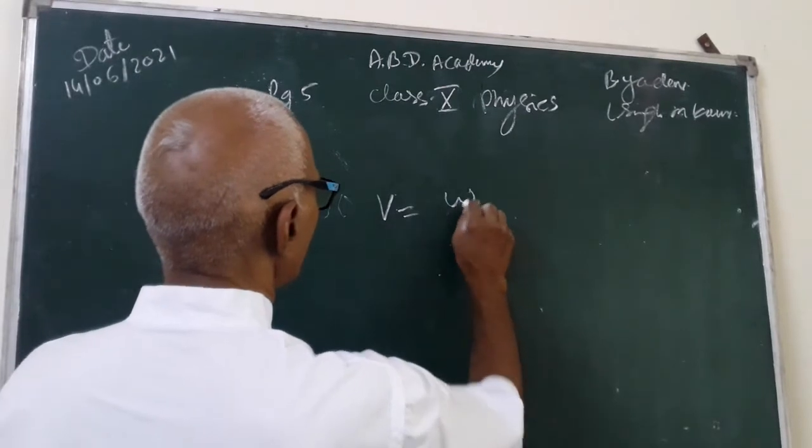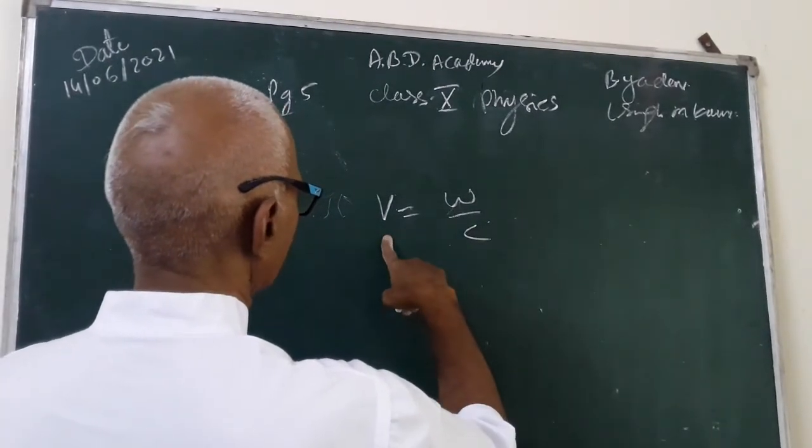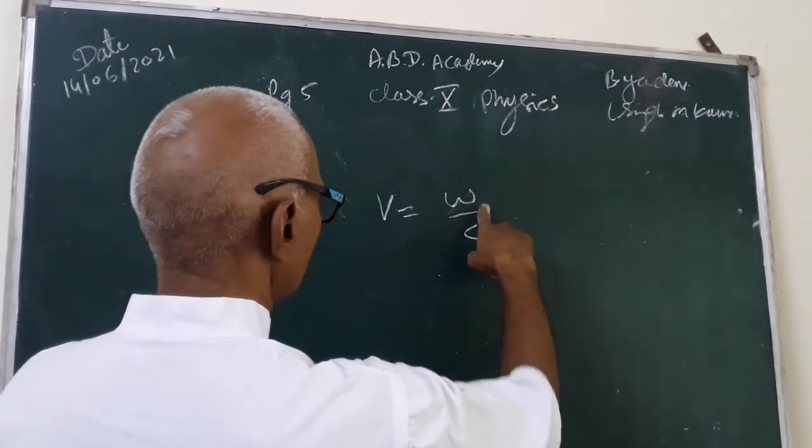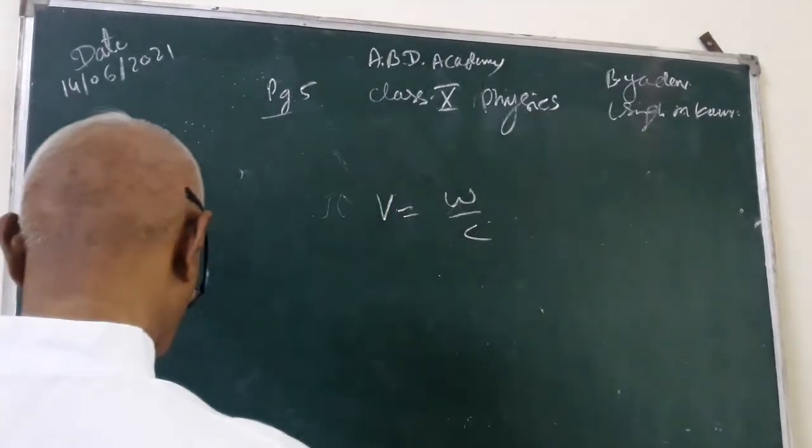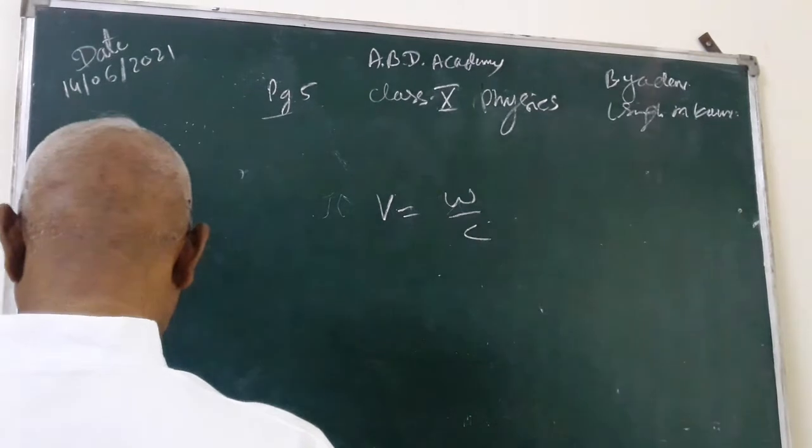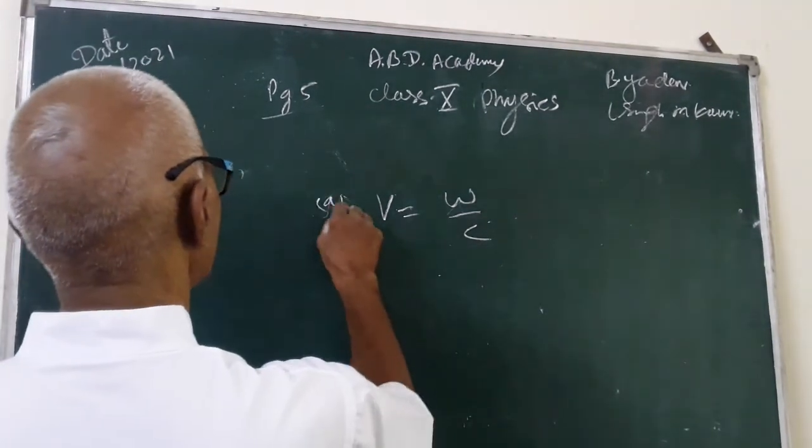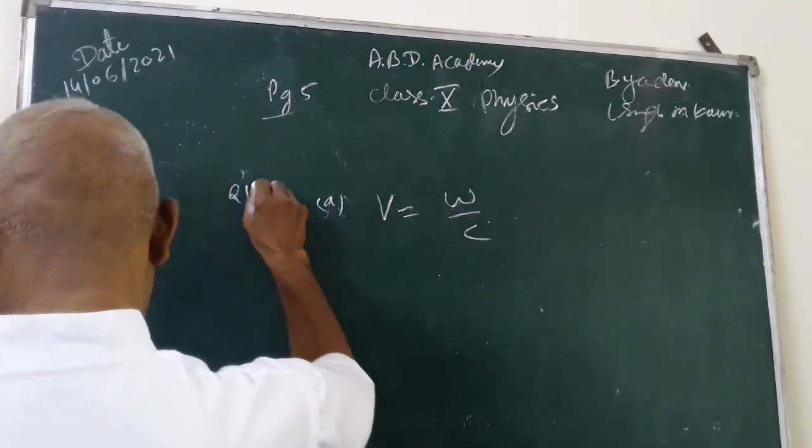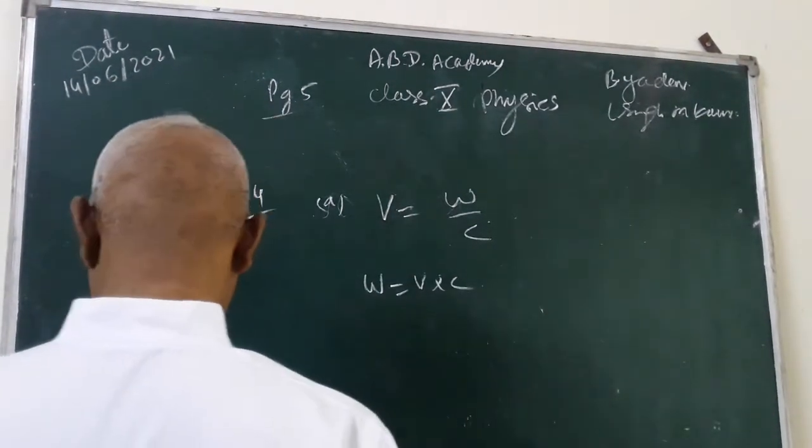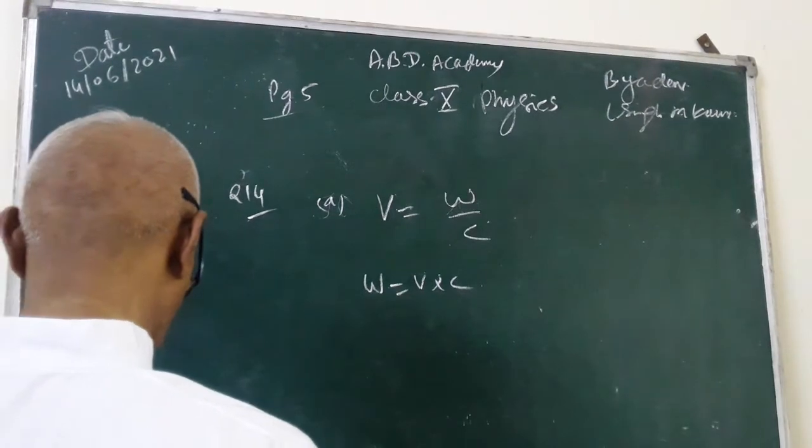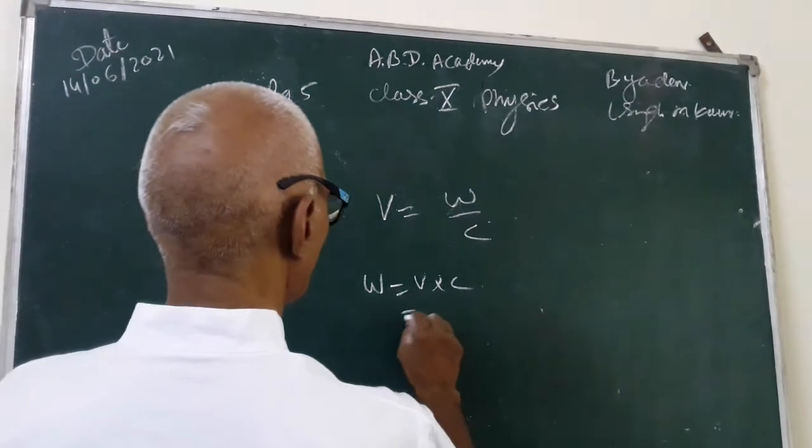State relation between potential difference, work done and charge moved. V is equal to W upon C. The potential is equal to work done upon charge moved.